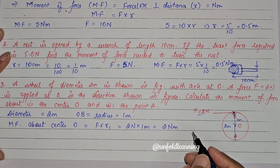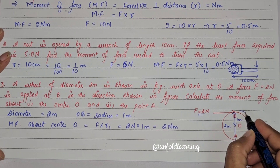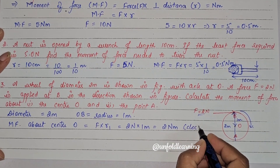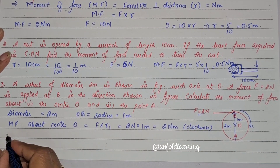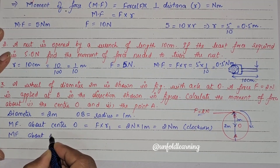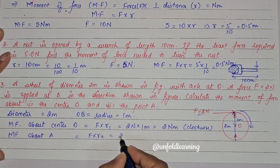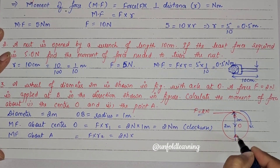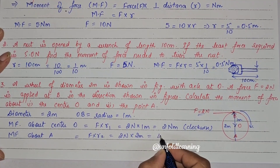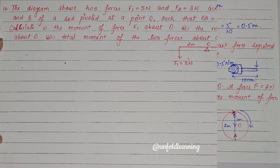The direction of rotation about O is clockwise. For moment of force about point A, the distance from A to B is the full diameter = 2 meters. So moment = 2 × 2 = 4 Nm, also in clockwise direction.